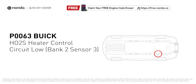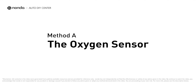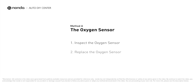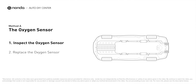This code may be triggered when your vehicle's control module detects a fault in the heater circuit and oxygen sensor bank two, sensor three. Here is one of the most practical solutions to fix Buick's P0063 error code — Method A: the oxygen sensor.